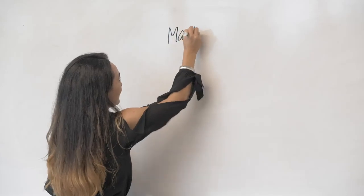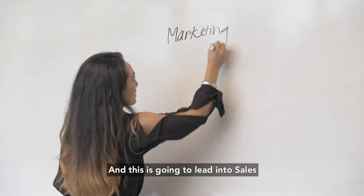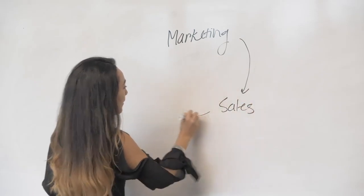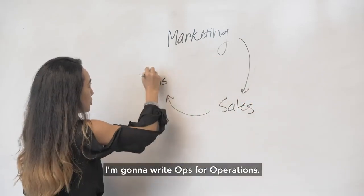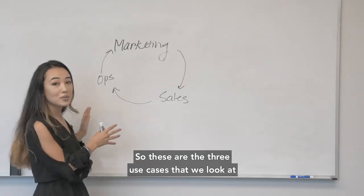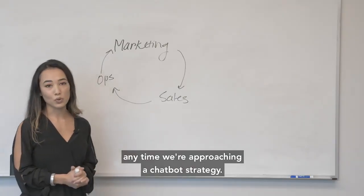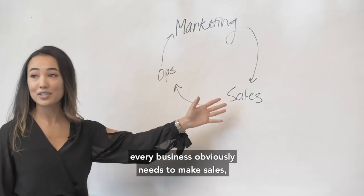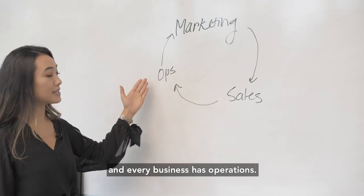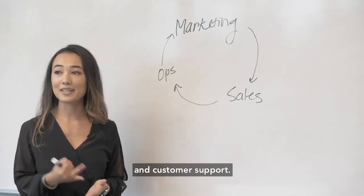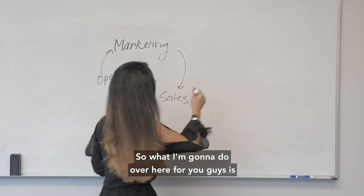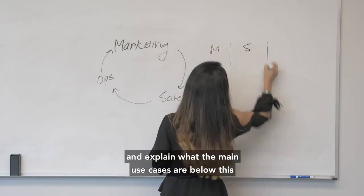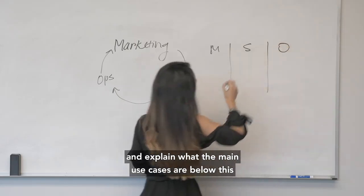The first category is marketing, and this leads into sales, which leads into ops — operations. These are the three use cases we look at anytime we're approaching a chatbot strategy. Every business needs marketing, every business needs to make sales, and every business has operations — things like repetitive tasks and customer support. I'm going to map these out and explain what the main use cases are below each one.